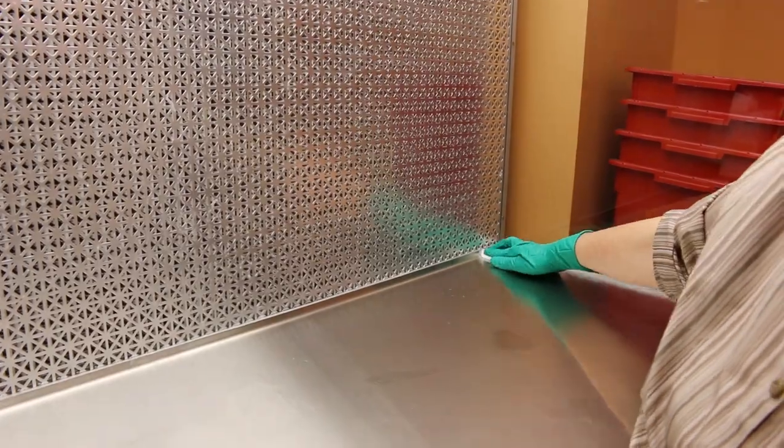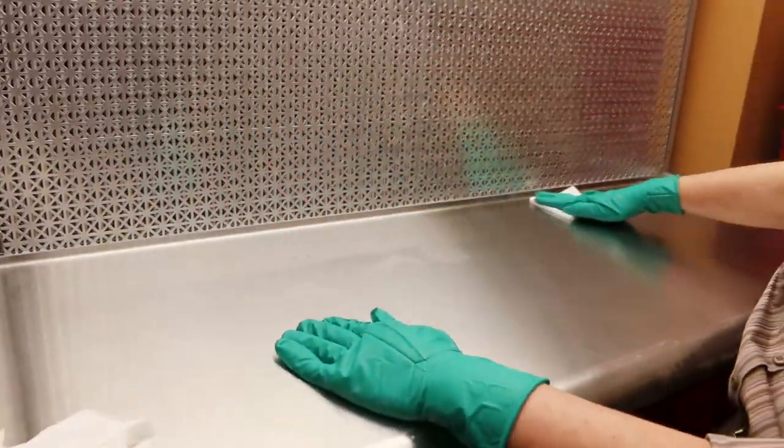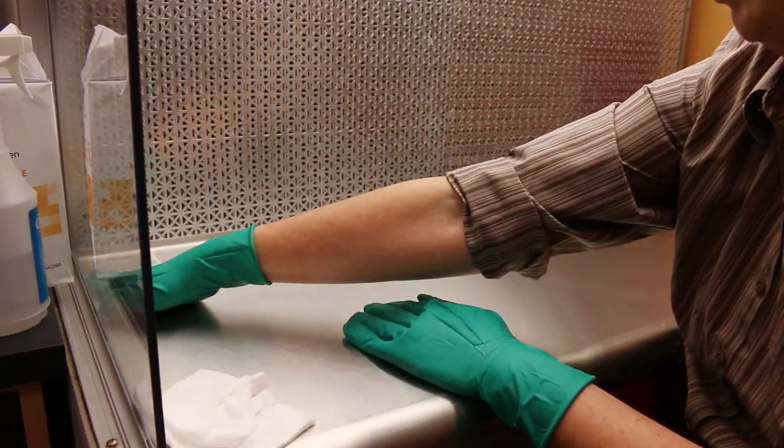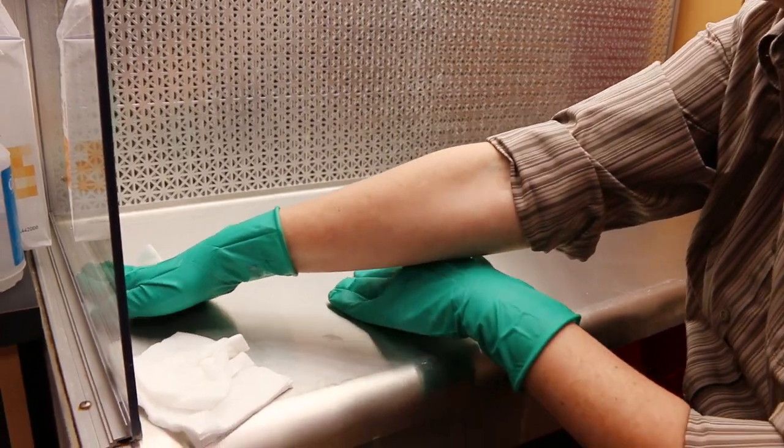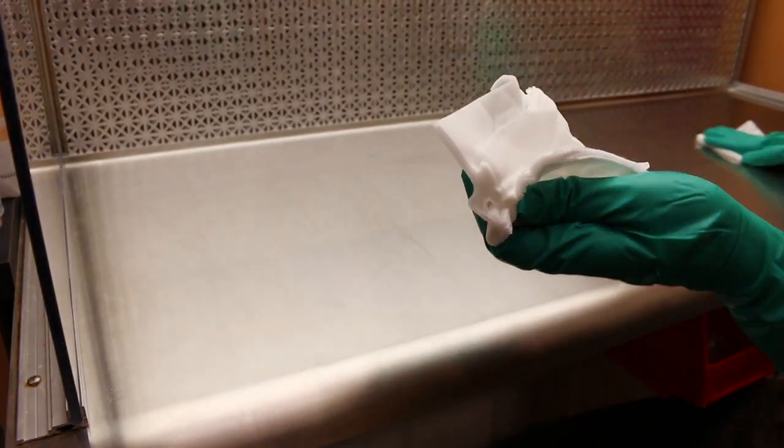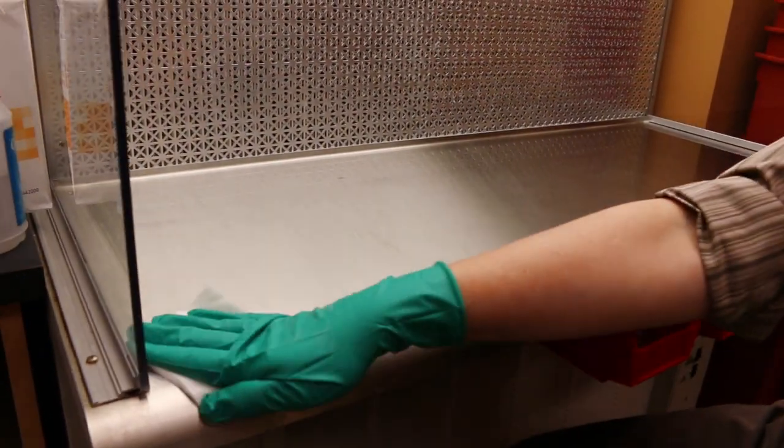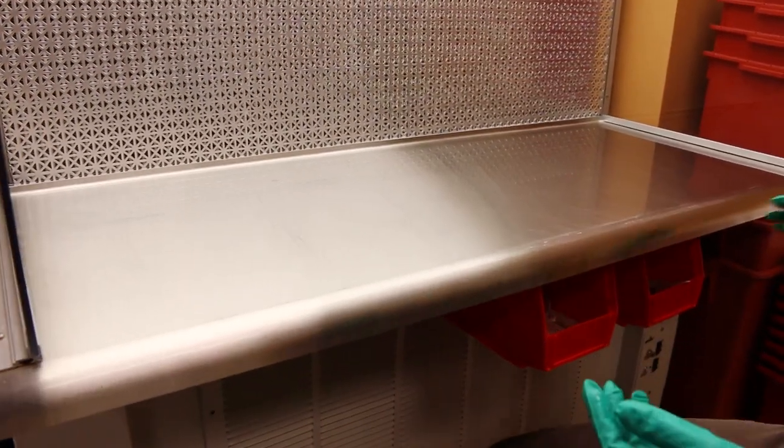And lastly, you would clean the base of the hood with overlapping strokes coming from the back by the filter to the front, and when you get to where you've set your used wipes, you pick those up with one hand, and then you come out of the hood. That is complete cleaning of the hood.